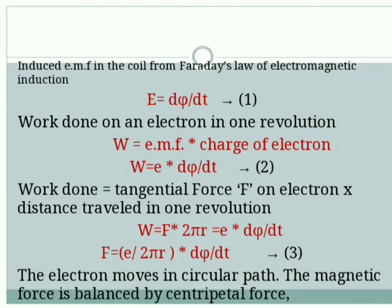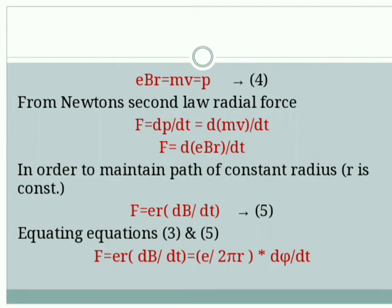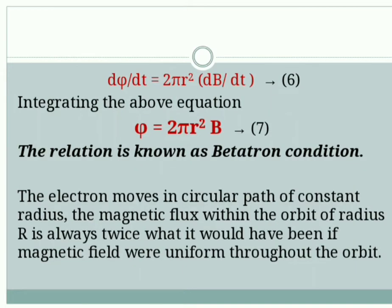The electron moves in a circular path. The magnetic force is balanced by centripetal force, so E/(2πR) equals Mv, where Mv is linear momentum, represented by P. From Newton's second law, radial force is written as F equals dp/dt, which equals d(eBr)/dt. In order to maintain a path of constant radius, F equals eR times dB/dt. Balancing both equations, we get dΦ/dt equals 2πR² times dB/dt. Integrating the above equation, we get Φ equals 2πR²B. This relation is known as the Betatron condition.